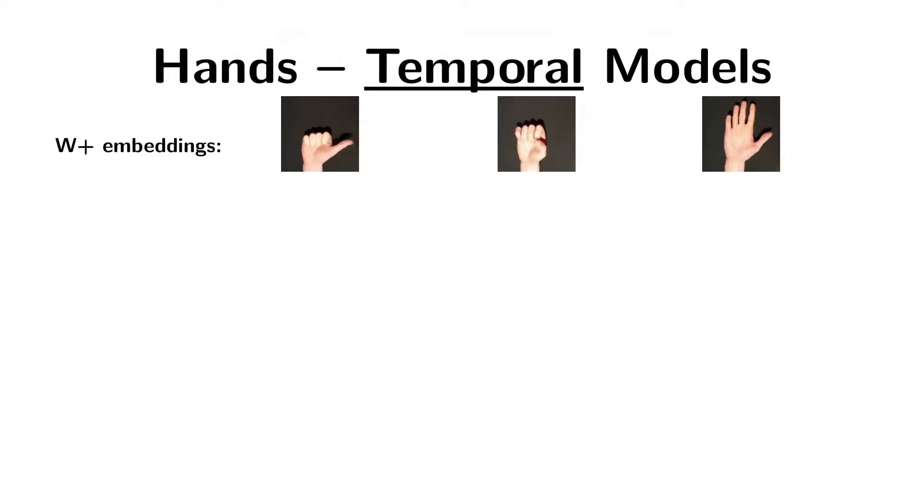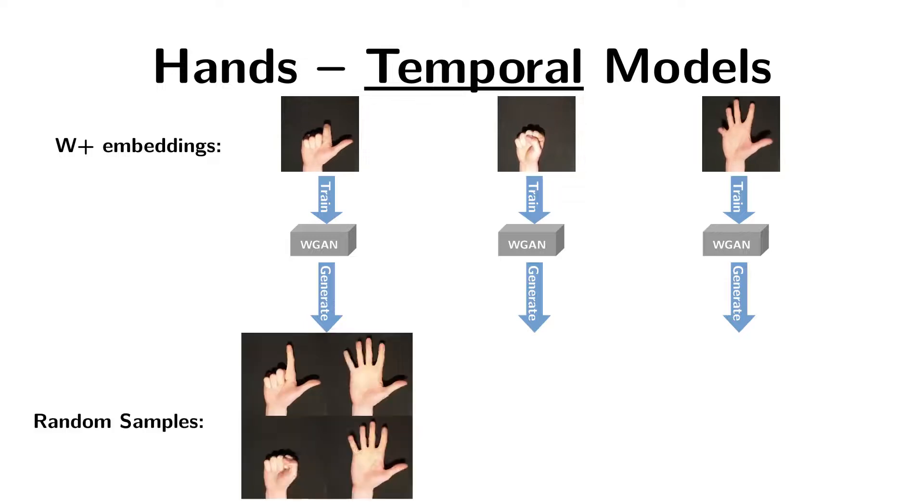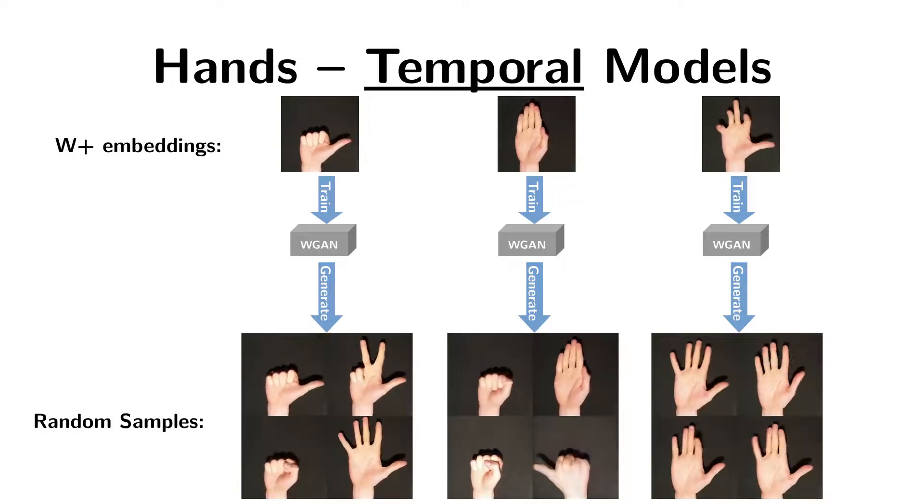After training our method on each of the five-minute sequences with a temporal window of 75 frames, the resulting models have learned to count, to sign, and to perform a less structured floating motion.